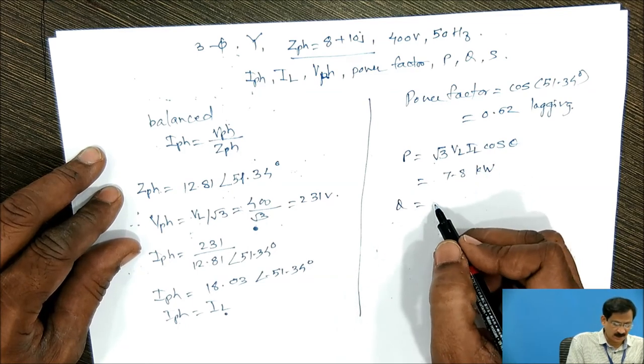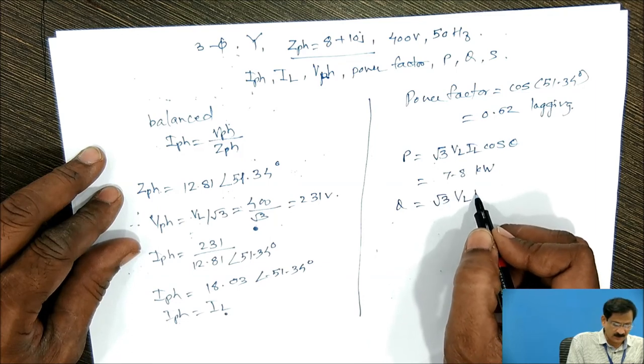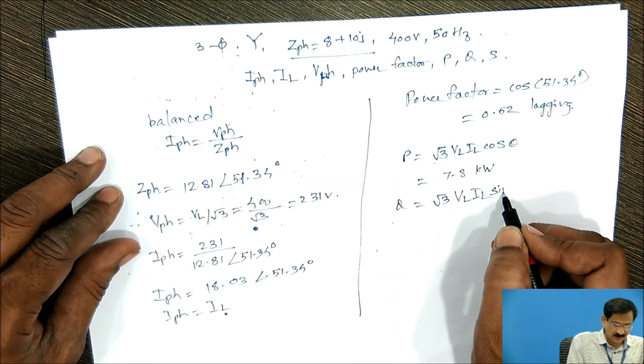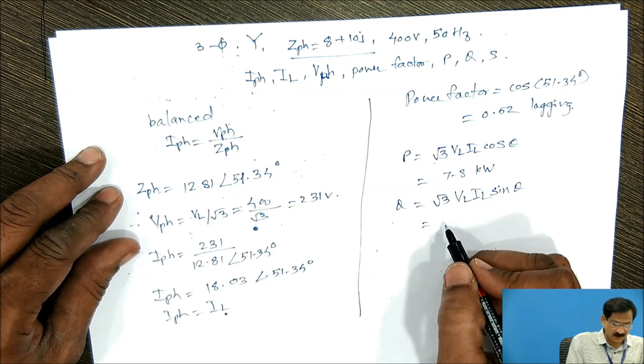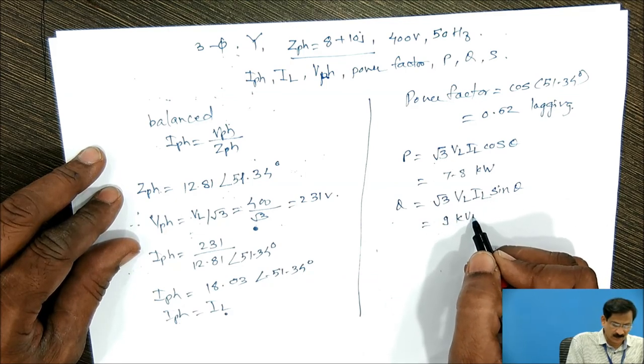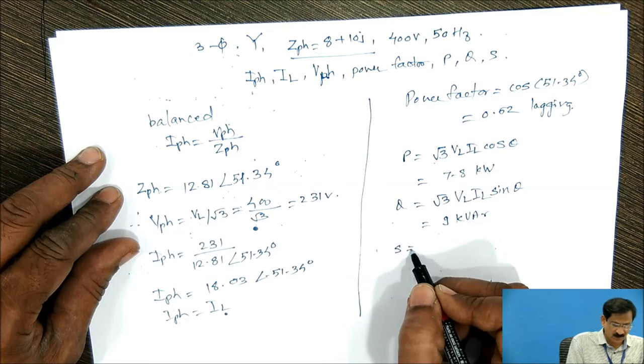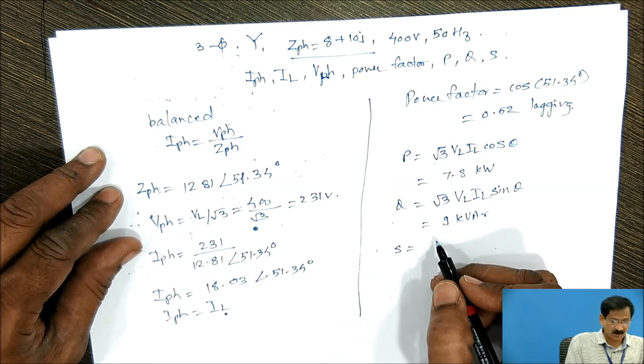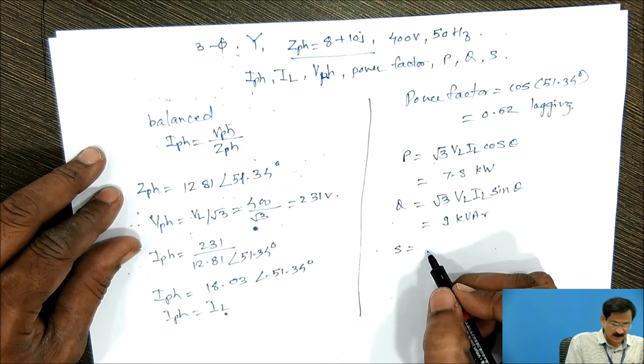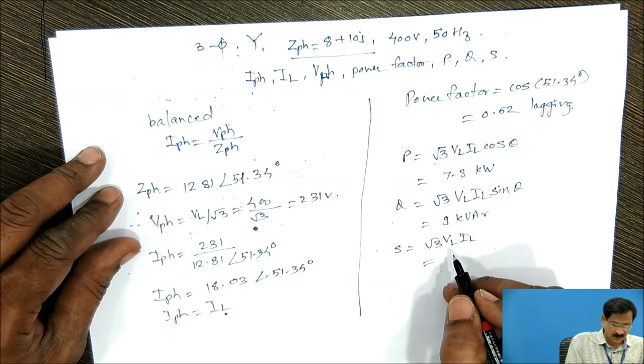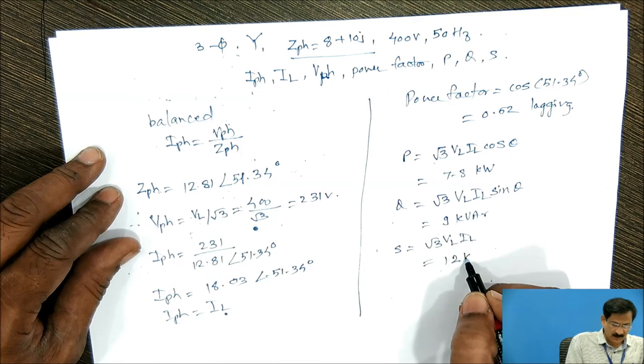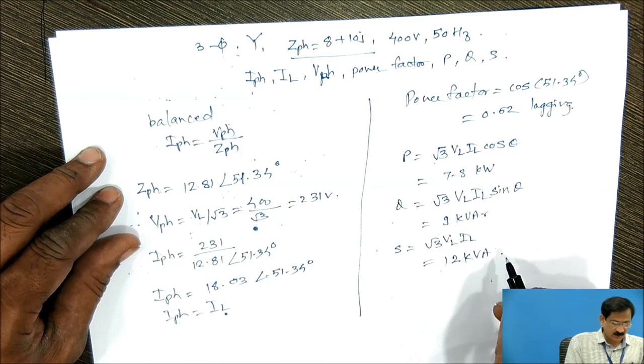Q reactive power, root 3 VL IL sin theta, comes out to be, again putting value of VL and IL, comes out to be 9 kilovolt ampere reactive. Similarly, apparent power is equal to root 3 VL into IL, put value of VL IL, comes out to be 12 kilovolt ampere.